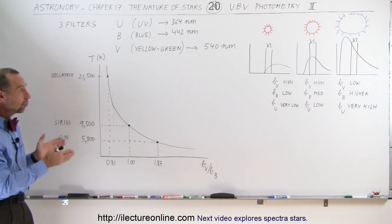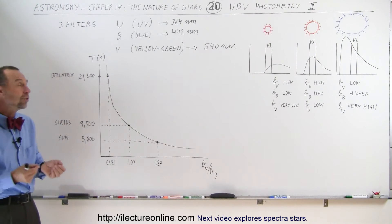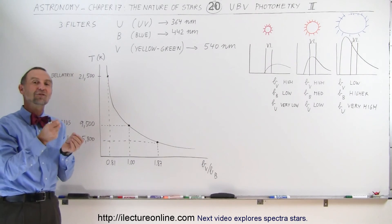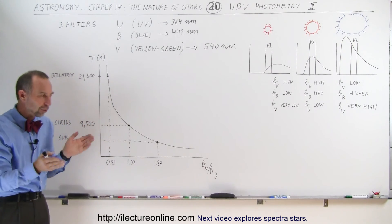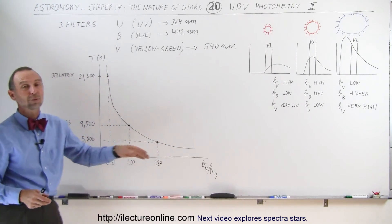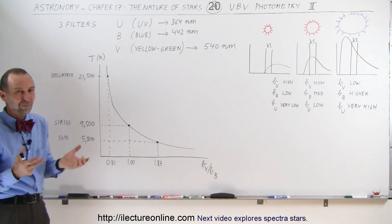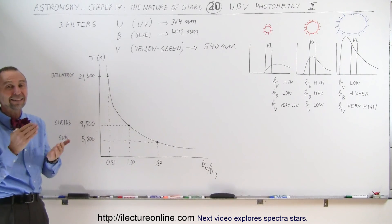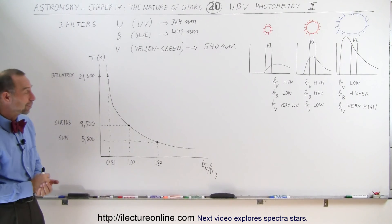So that's how we use what we call UBV photometry. We use the three filters, we look at the brightness of the star with the three filters, we do the ratios, not just visible to blue but also blue to UV radiation. And from that we can pretty well nail down the exact temperature and the exact color of the star. And that's how we do that.